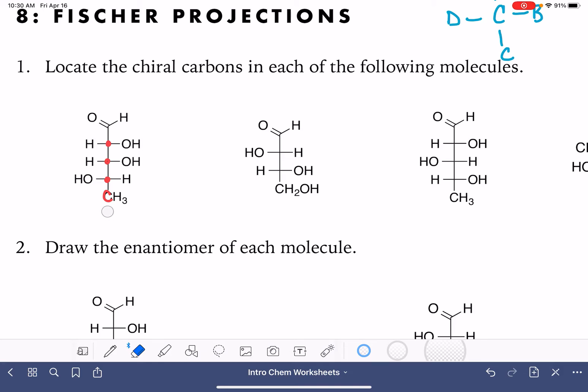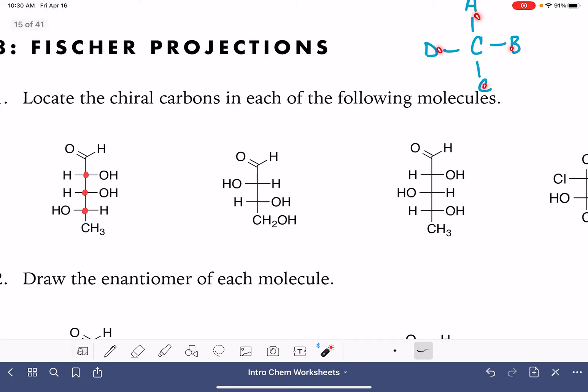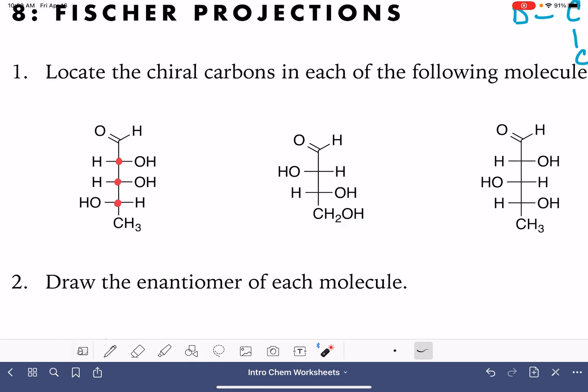Also, the carbon atom that's down here on the bottom, that one can't be a chiral carbon either because it has three hydrogens. In order to be chiral, you have to have four completely unique things. You can't have three identical hydrogen atoms. So these three remaining spots, those all represent the chiral carbons.